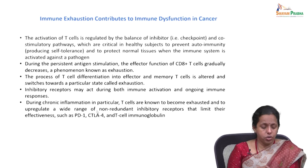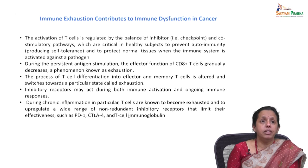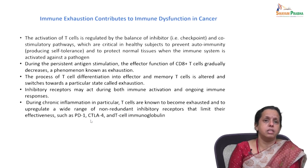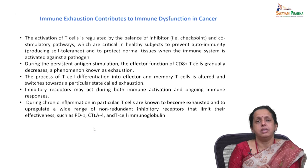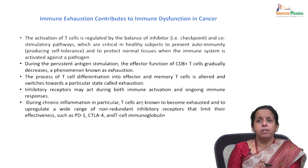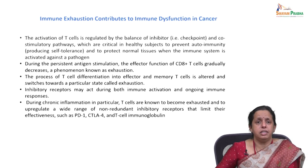During chronic inflammation, T cells become exhausted and upregulate a wide range of non-redundant inhibitory receptors that limit their effectiveness. The whole purpose of T cell effectiveness is totally lost. When receptors such as PD-1, CTLA-4, and T cell immunoglobulin increase, the interaction between inhibitory receptors and their ligands re-invigorates intratumoral CD8 T cells.